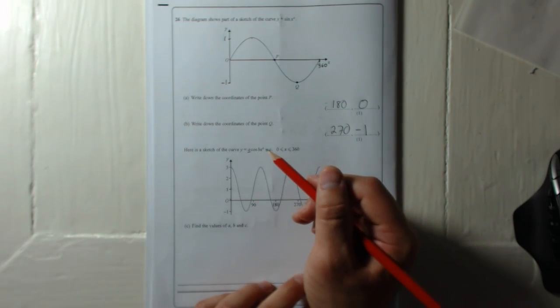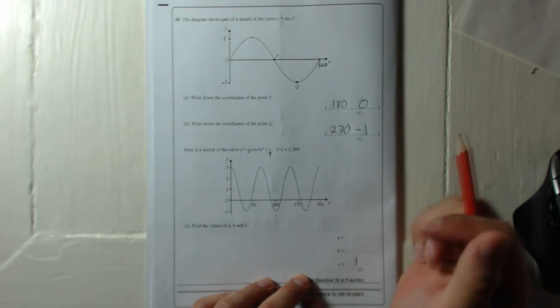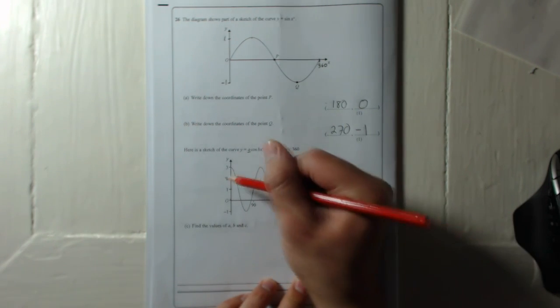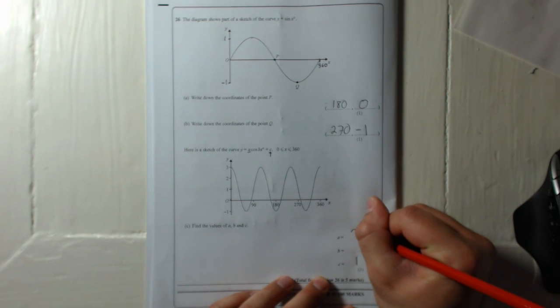So from minus 1 to 3, it's doubled, and that would be that a. If you put a number in front of your equation, your graph equation, that will double the height of it. Well, if it's a 2 it will double it; if it's a 3 it will triple it, and so on. So this has been doubled in height, so a is 2.